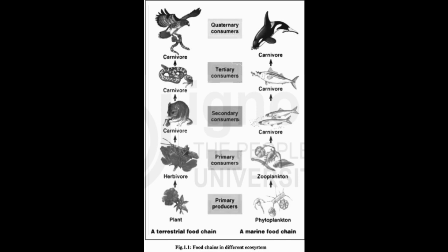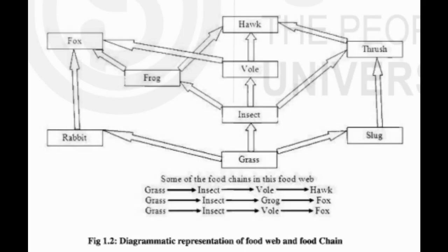Saprotrophs (Greek: sapros = rotten, trophos = feeder) are also called decomposers or reducers. They break down the complex organic compounds of dead matter of plants and animals. Decomposers do not ingest their food. Instead, they secrete digestive enzymes into the dead and decaying plant and animal remains to digest the organic material. Enzymes act upon the complex organic compounds of the dead matter. Decomposers absorb a part of the decomposition products for their own nourishment, while the remaining substances are added as minerals to the substratum through mineralization. Released minerals are reused as nutrients by the plants (producers).